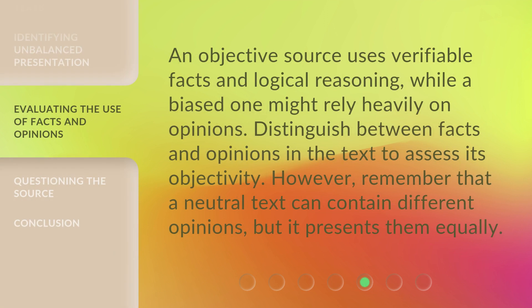An objective source uses verifiable facts and logical reasoning, while a biased one might rely heavily on opinions. Distinguish between facts and opinions in the text to assess its objectivity. However, remember that a neutral text can contain different opinions, but it presents them equally.